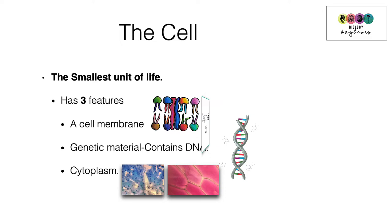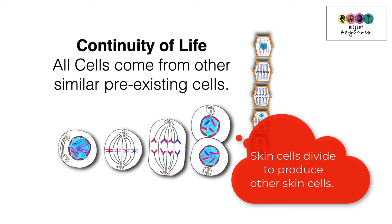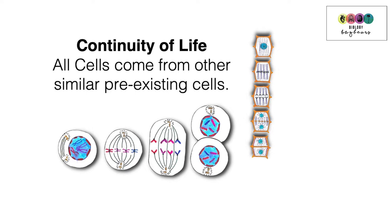So where do cells come from exactly? Cells have to come from other similar cells, so skin cells have to give rise to other new skin cells, and this is continuity of life. All cells come from other similar pre-existing cells.